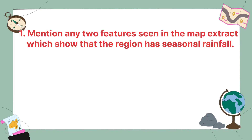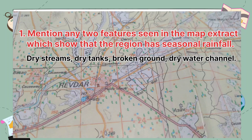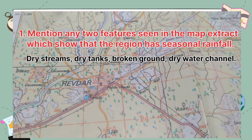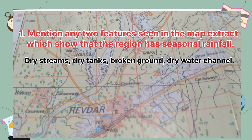Mention any two features seen in the map extract which show that the region has seasonal rainfall. Dry streams, dry tanks, broken ground, and dry water channels are the two features that show the region has seasonal rainfall.